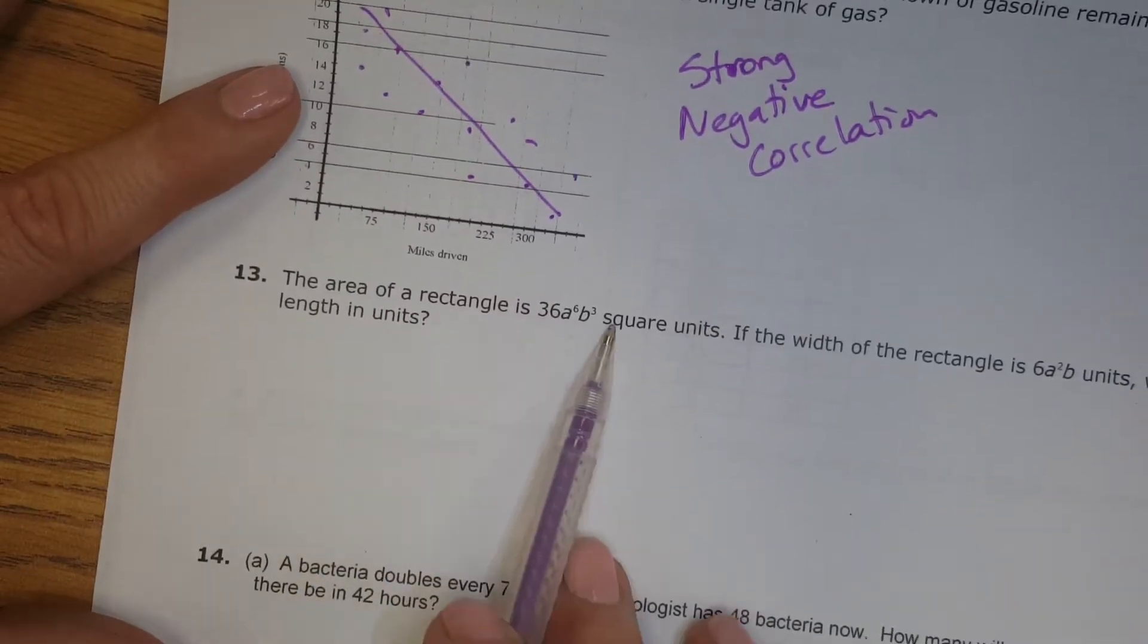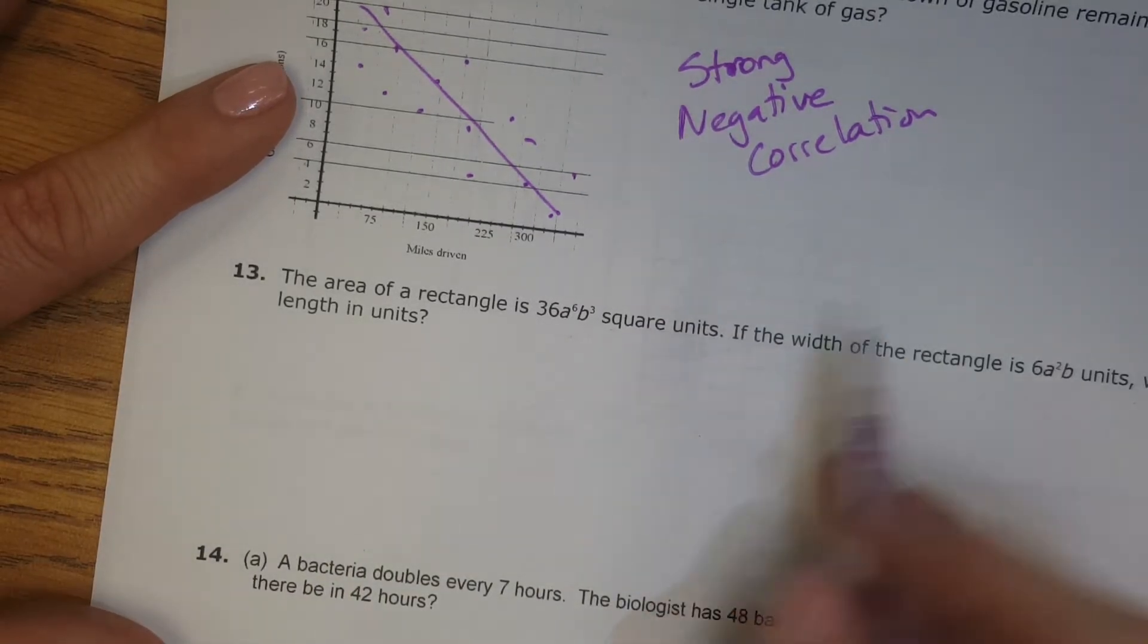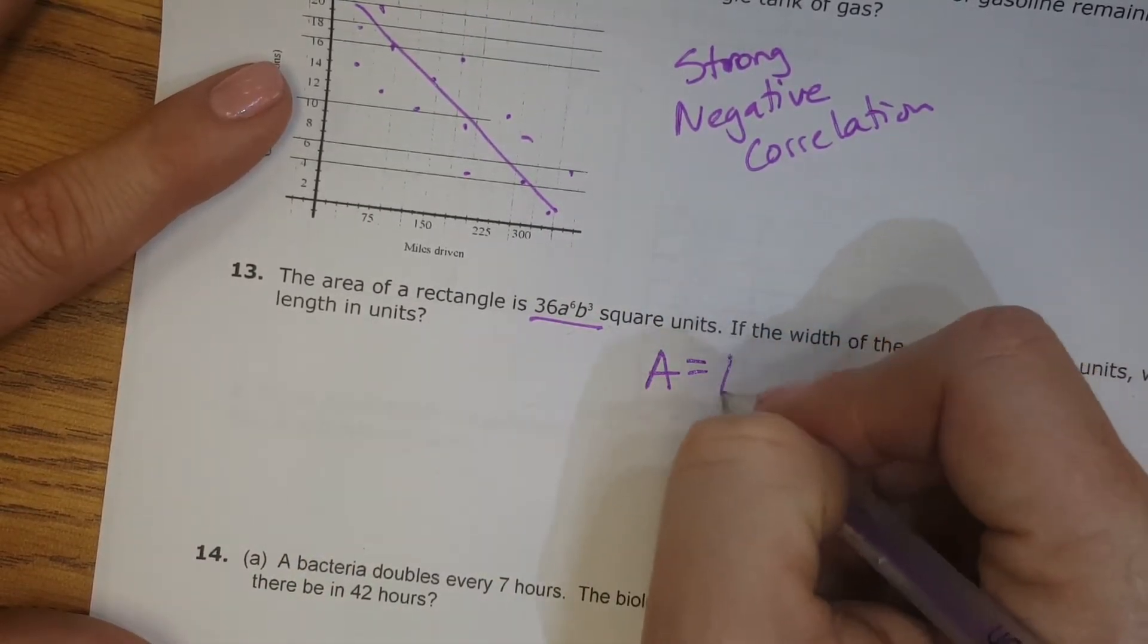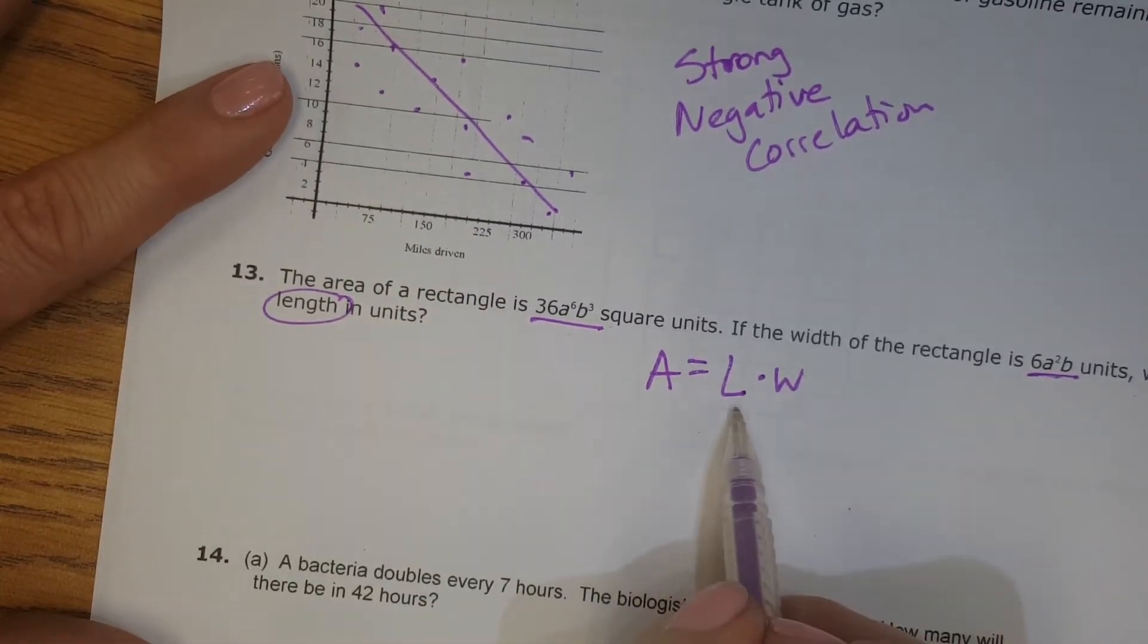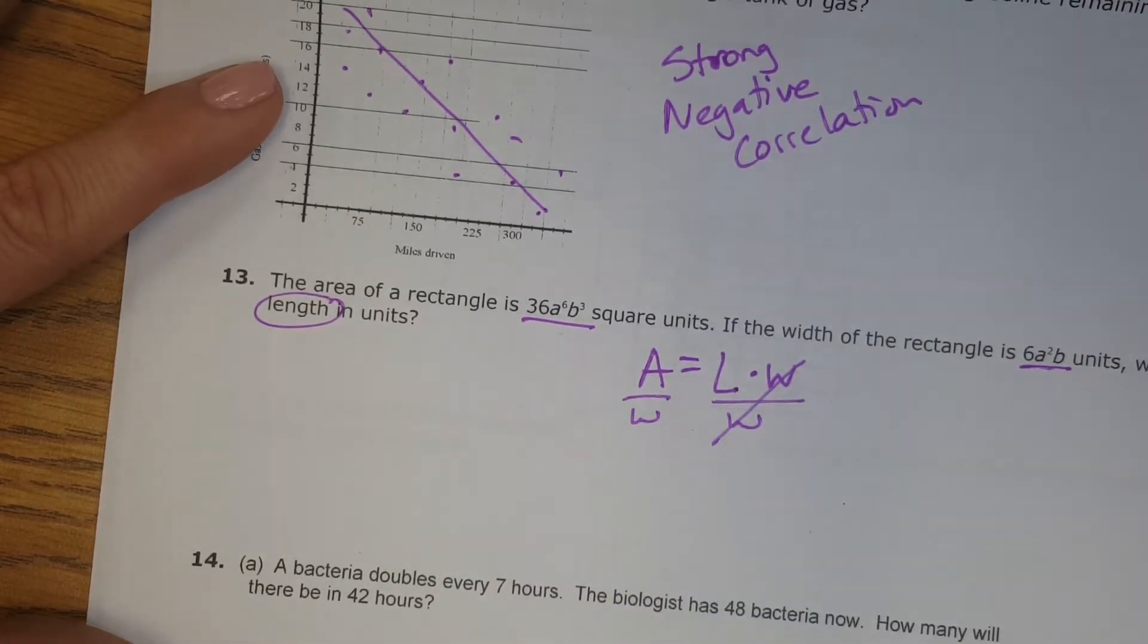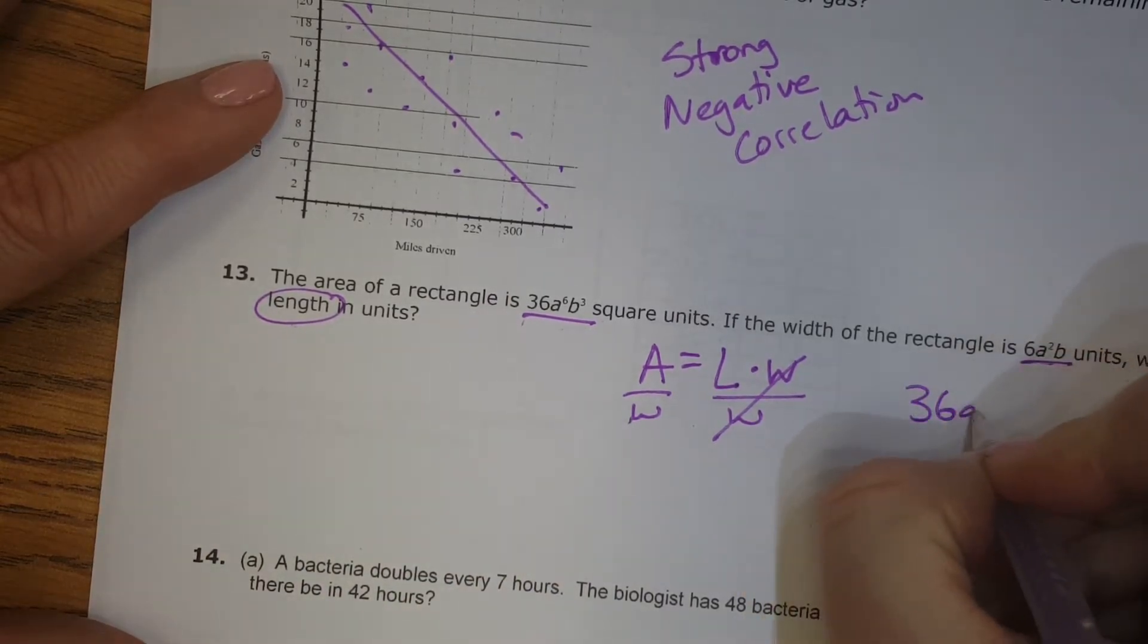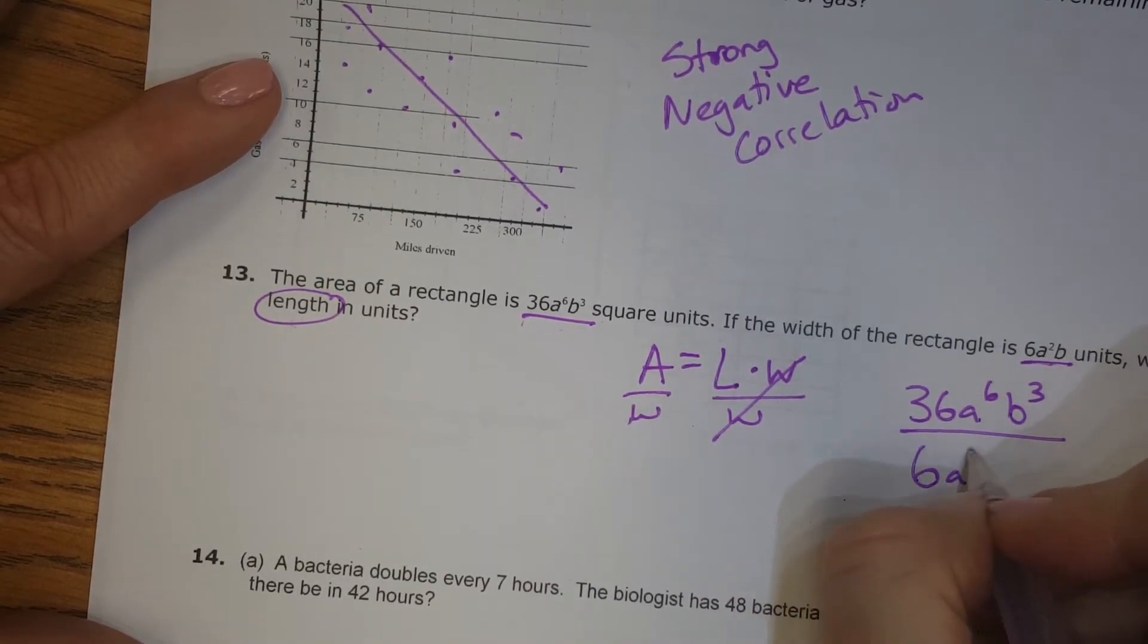Number 13, the area of a rectangle is 36a to the 6th b to the 3rd square units. If the width of the rectangle is 6a squared b units, what is the length? So if we remember that area of a rectangle is length times width, and they want us to find the length to get the l by itself. Basically, we're just dividing both sides by width, right? So to solve this for length, I just need to take my area and divide it by my width. So my area was 36a to the 6th b to the 3rd, and my width is 6a squared b.